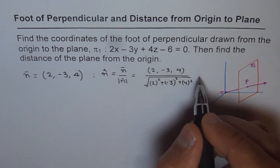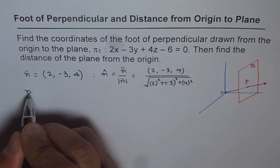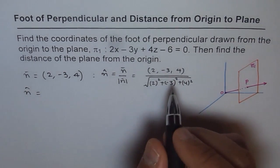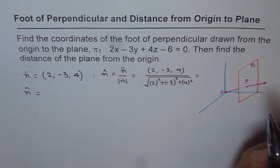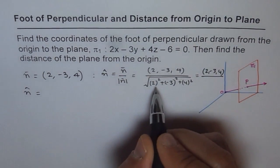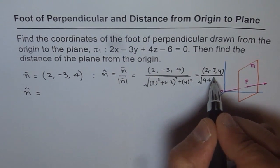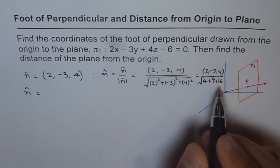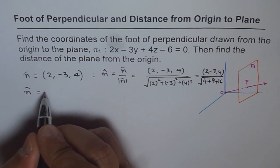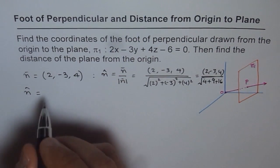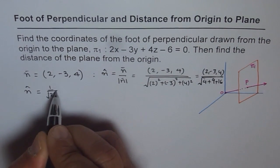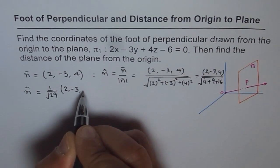Computing the magnitude: 2² = 4, (-3)² = 9, 4² = 16, so 4 + 9 + 16 = 29. Therefore the unit vector is 1/√29 times (2, -3, 4). This is the unit vector along OP.